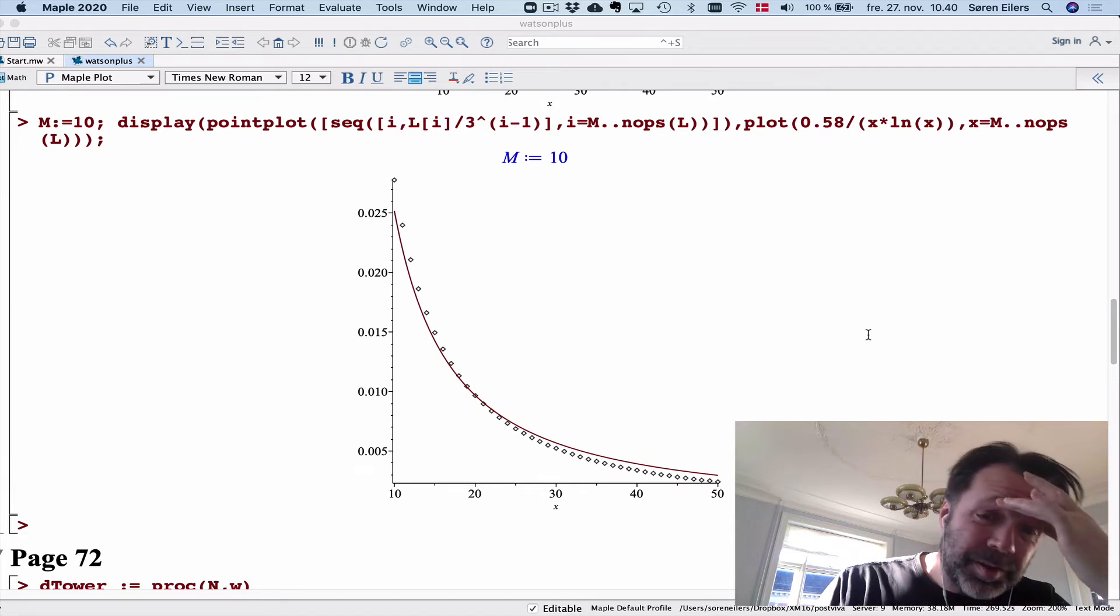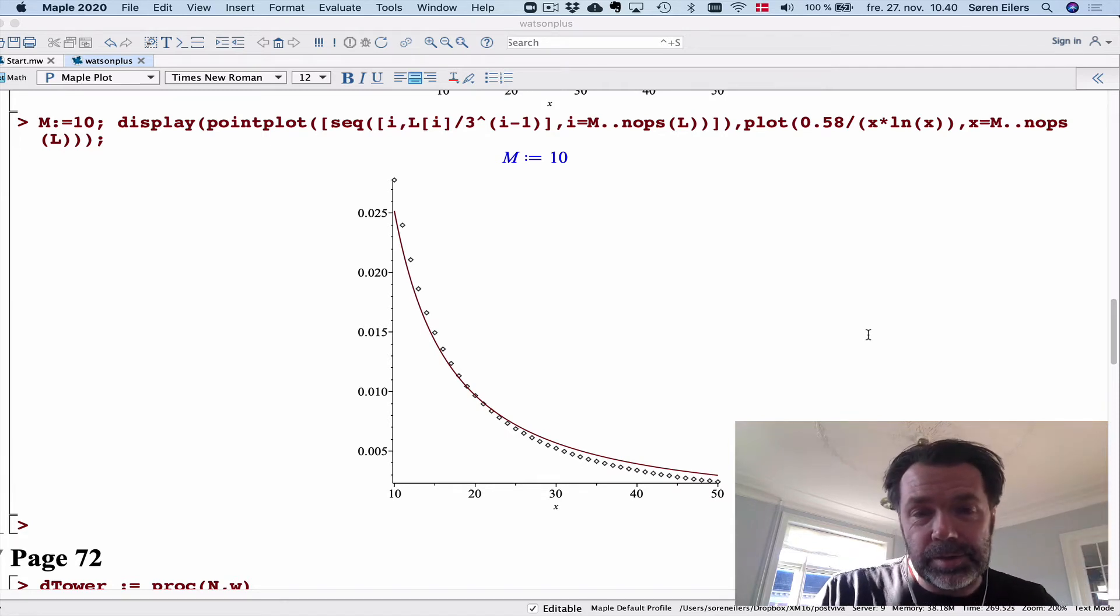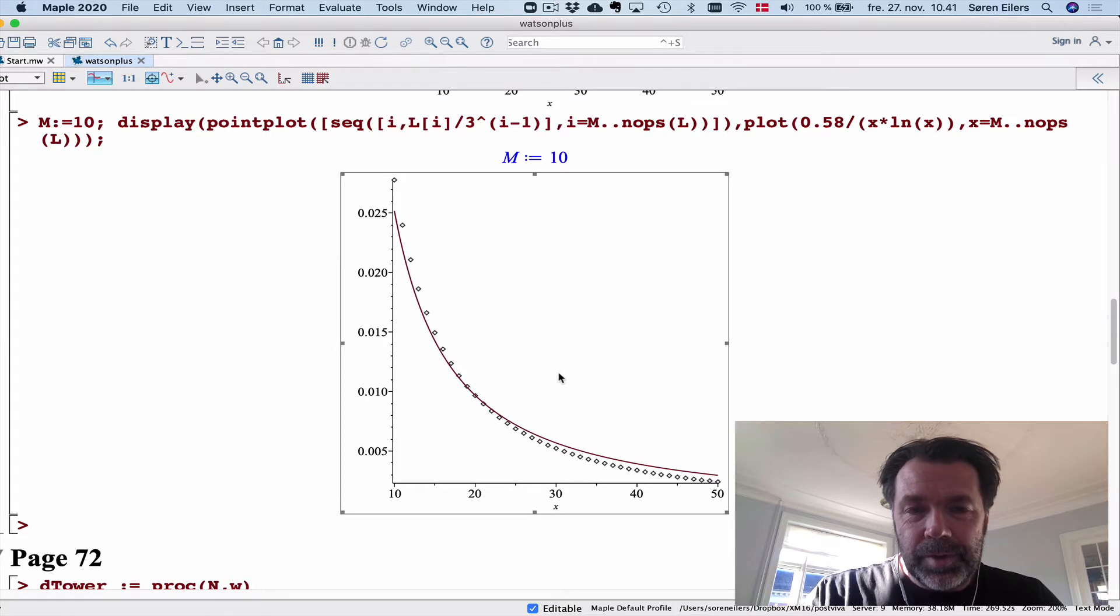This was the result of comparing the conjecture by Watson to counting a little bit further. I think it shows that the naive idea of Watson to compare with 1 over x log x is not going to work.